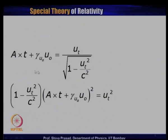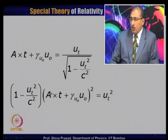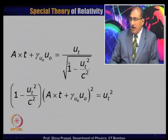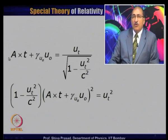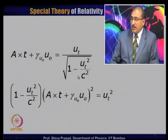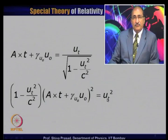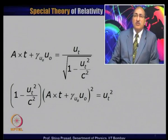This is the same equation squared. Once squared, the left-hand side becomes (At + γ_u₀·u₀)². The right-hand side becomes uₜ² / (1 - uₜ²/c²). Taking the denominator to the left-hand side, we get (1 - uₜ²/c²)·(At + γ_u₀·u₀)² = uₜ². Now I will organize the terms: collect all terms with uₜ² and those without uₜ², then solve for uₜ².